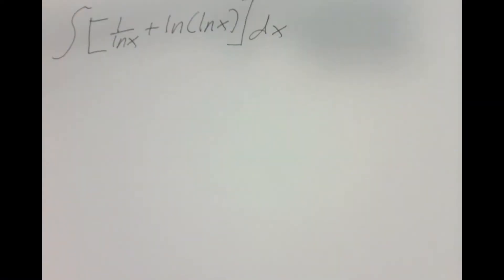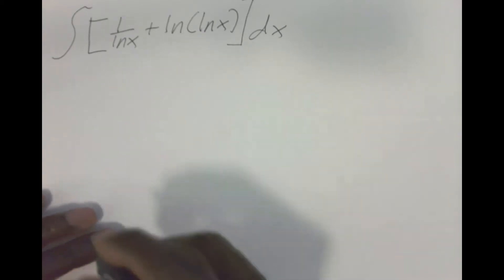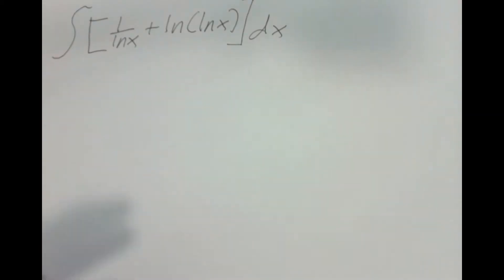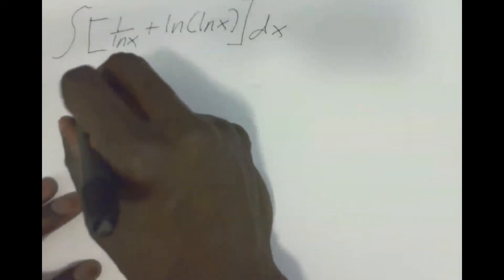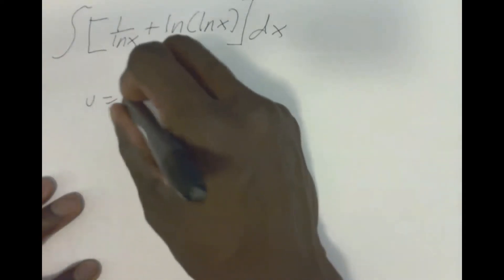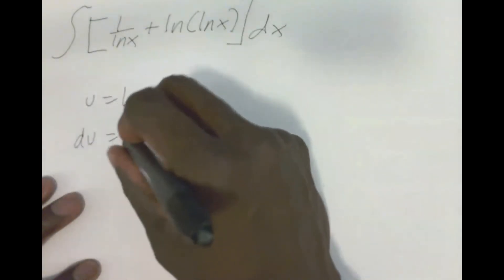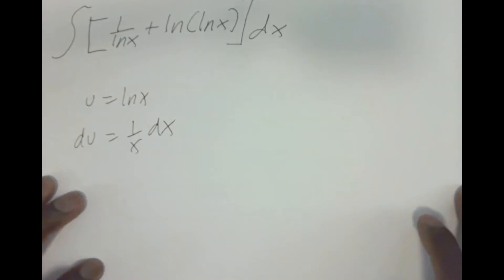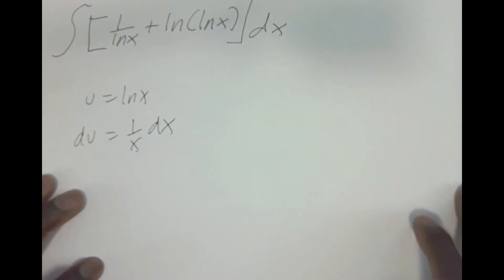When you look at a problem like this, the only thing you can really think about doing is a U-substitution. So I'm going to do a little U-sub. If you were doing a U-sub, what would you make U equal in this case? There's only one obvious choice, and that is to make U equal to ln x, which means DU would be 1 over x · dx.